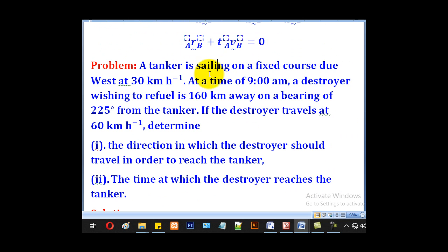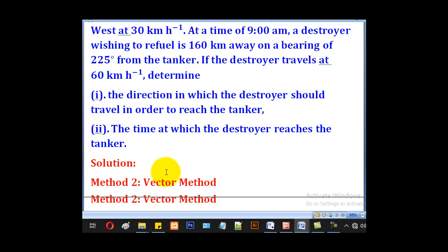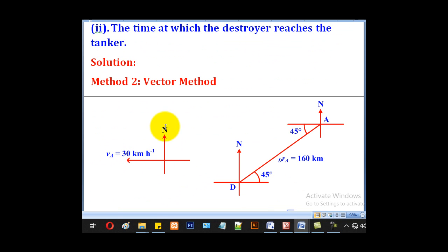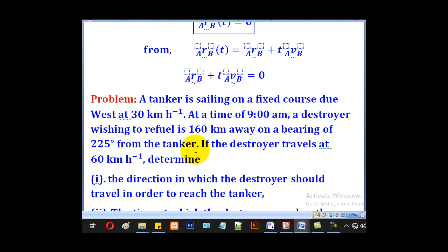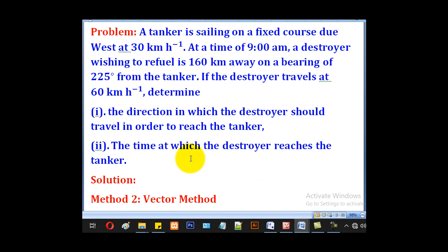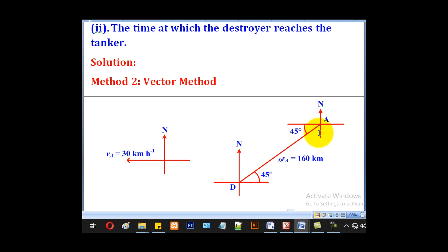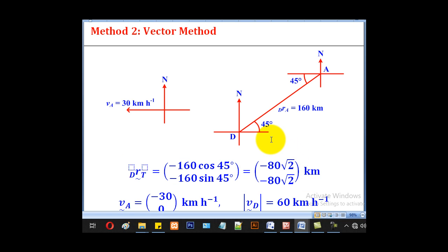The first step is to make a sketch of the directions. For this tanker, the velocity is 30 km per hour due west. Then the destroyer wishing to refuel is 160 km away on a bearing of 225° from the tanker. A denotes the position of the tanker and D for the destroyer. This destroyer is on a bearing of 225° away from the tanker, so the remaining angle will be 45°. This is the distance, 160 km. So those are the initial positions of the destroyer and the tanker.